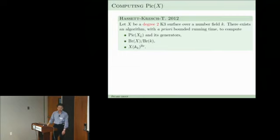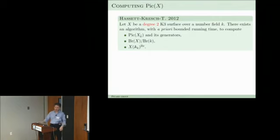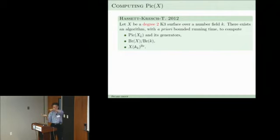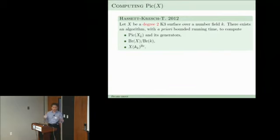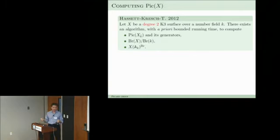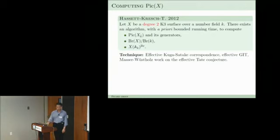We construct explicitly an Azumaya algebra over the complement of the singular fibers in one fibration. When you look at another fibration you get it outside the singular fibers of the other fibration, and they intersect in finitely many points. Then there is something called purity, which allows you to extend — there's a unique class that extends. This is quite messy; the running times are a priori bounded but huge. It's a theoretical result — computable, but barely practical.